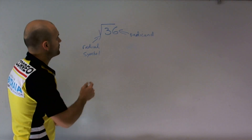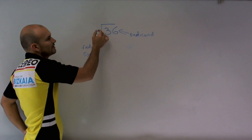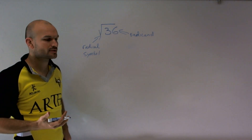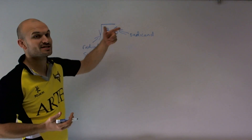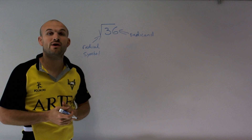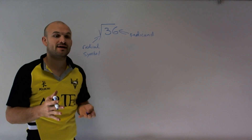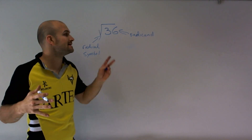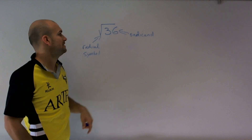The radical symbol, when represented just like this, we call this the square root — meaning what factor am I going to have to multiply by itself twice to give me my radicand?